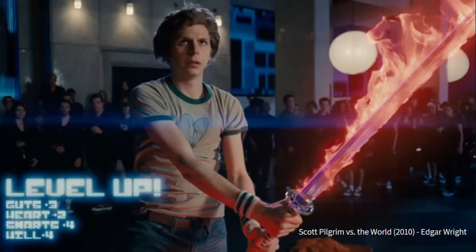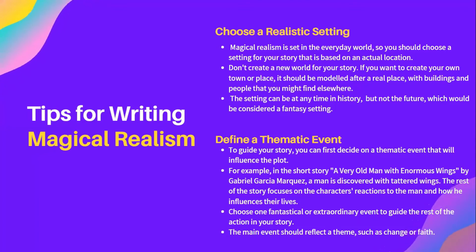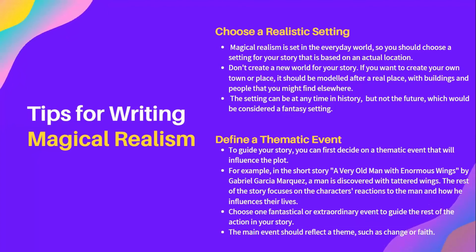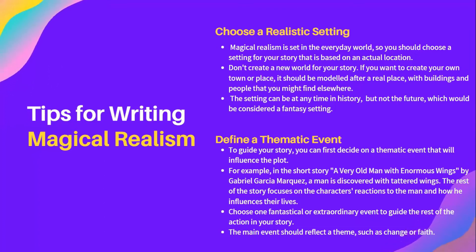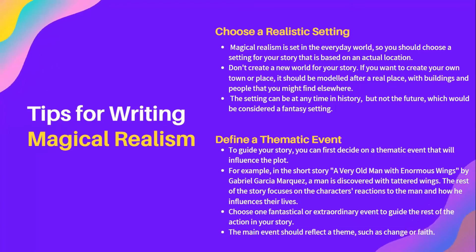Now that we are equipped with the necessary background, breakdown, and examples of magical realism, how do we go about writing it? Here are some tips. Firstly, you should choose a realistic setting. Magical realism is set in the everyday world, so you should choose a setting based on an actual location — you shouldn't create a new world for your story. If you want to create your own town or place, it should be modeled after a real place with buildings and people you might find elsewhere. The setting can be at any time in history; however, it should not be in the future, which would be considered a fantasy setting.